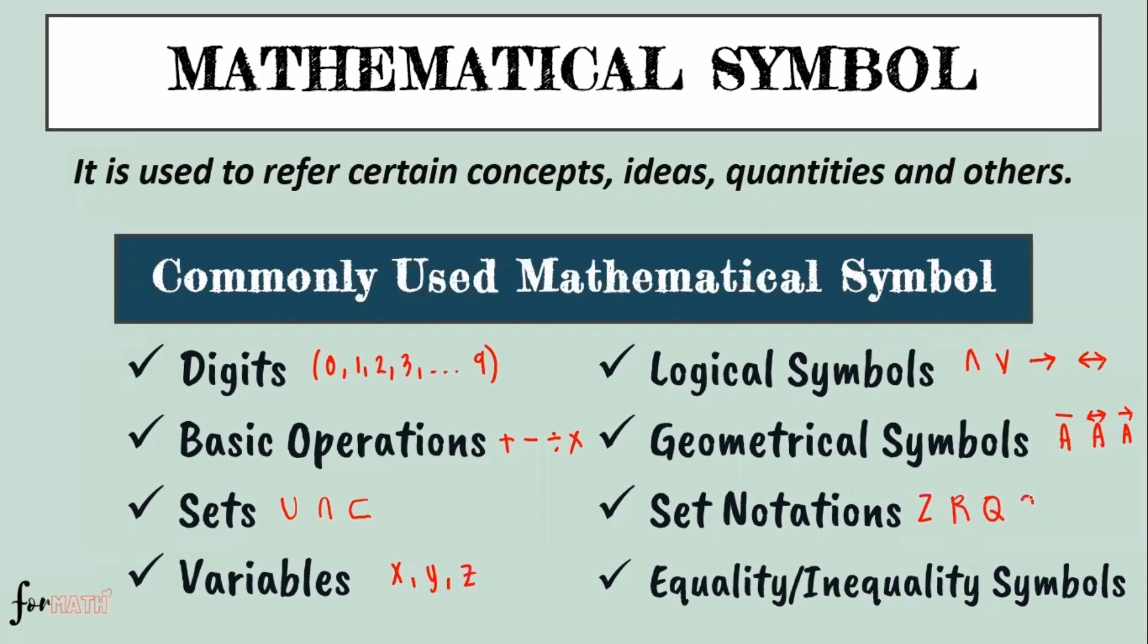Example, the letter Z means integers. R means real number. Q is rational, C is complex numbers, N is natural number. So those are our set notation symbols we use. For equality, the equal sign. For inequality, greater than or less than. So those are the mathematical symbols we use in math.